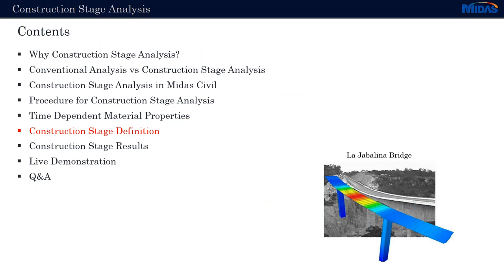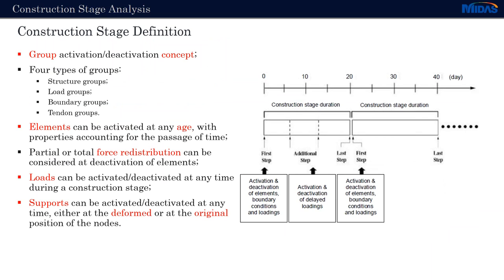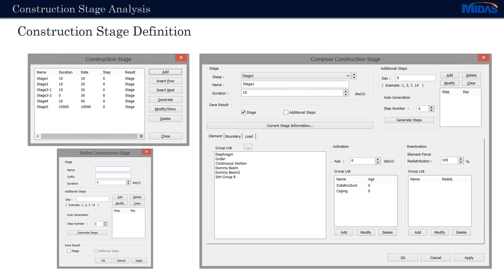Now let's see how we can define the stages themselves. The basic concept of construction stage definition in MIDAS Civil is based on group activation or deactivation. All structure, loads, or boundary groups can be activated or deactivated at any stage. You can see the list of stages — these can be automatically generated or added manually. In the stage definition, we can choose a name, a duration, any additional steps, whether to save results for the stage, and which elements, boundaries, or loads to be activated or deactivated.